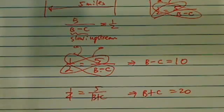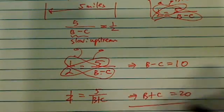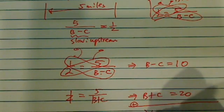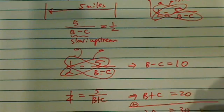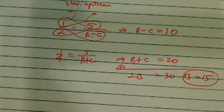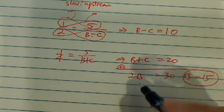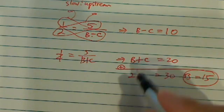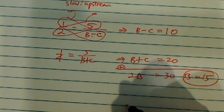If you add those two equations, you have 2B equals thirty. Obviously B equals fifteen, so that's the boat speed.